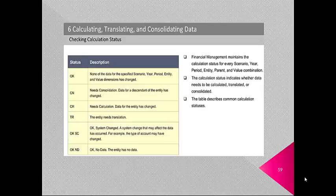The calculation status indicates whether data needs to be calculated, translated or consolidated. Common statuses include: OK — no data has changed for the specified combination; CN — needs consolidation; CH — needs calculation; TR — the entity needs translation; OKSC — data is OK but a system change that may affect the data has occurred (for example, an account type may have changed); OKND — OK with no data.